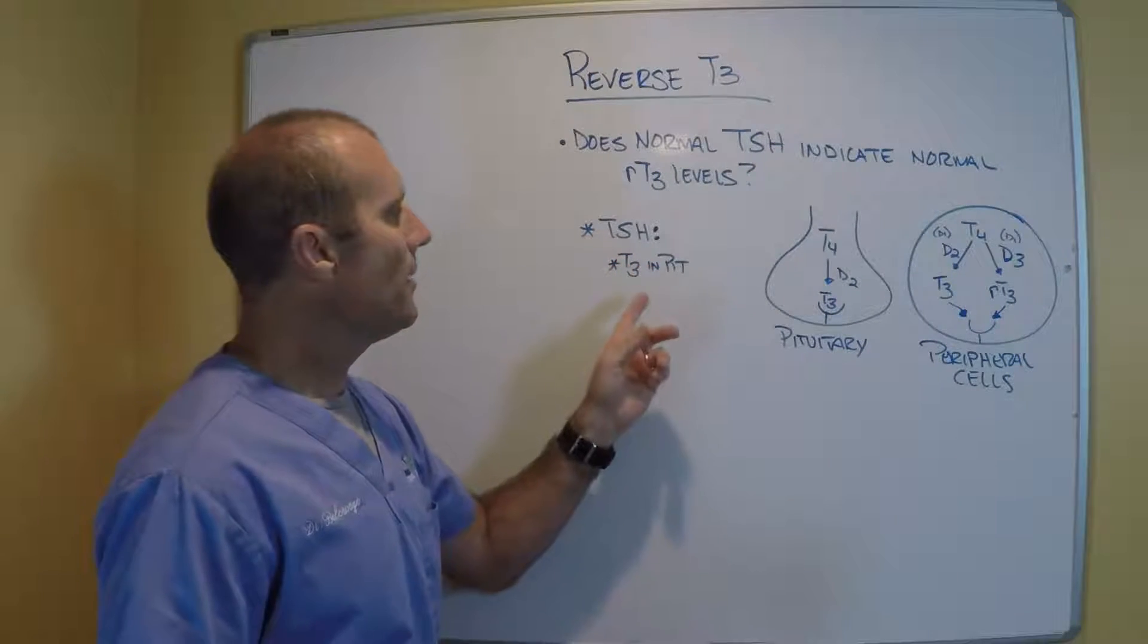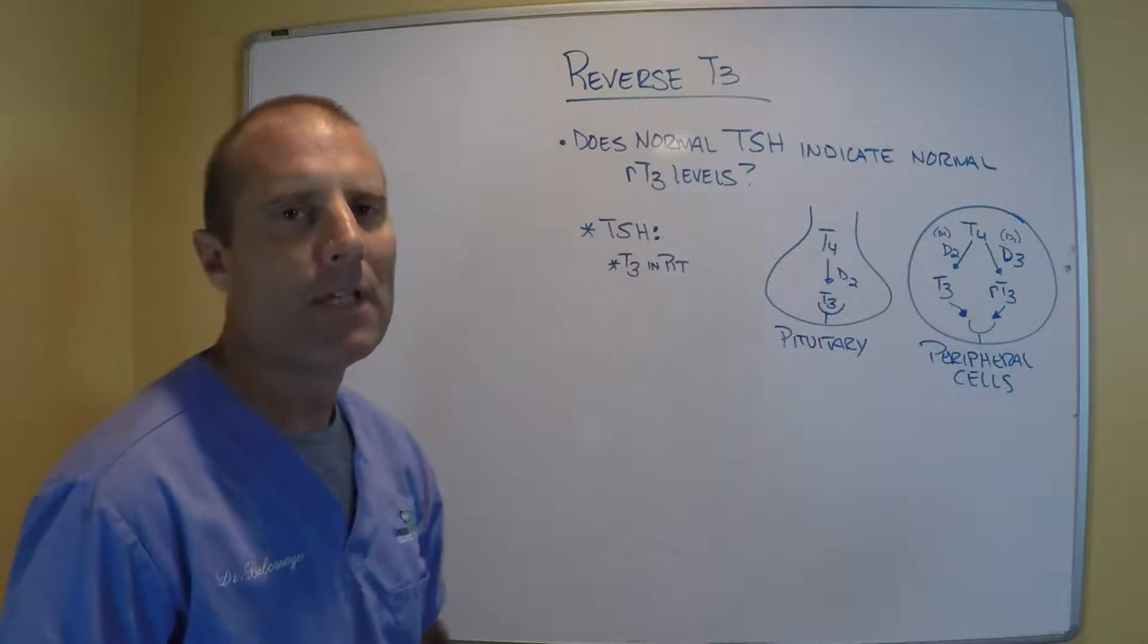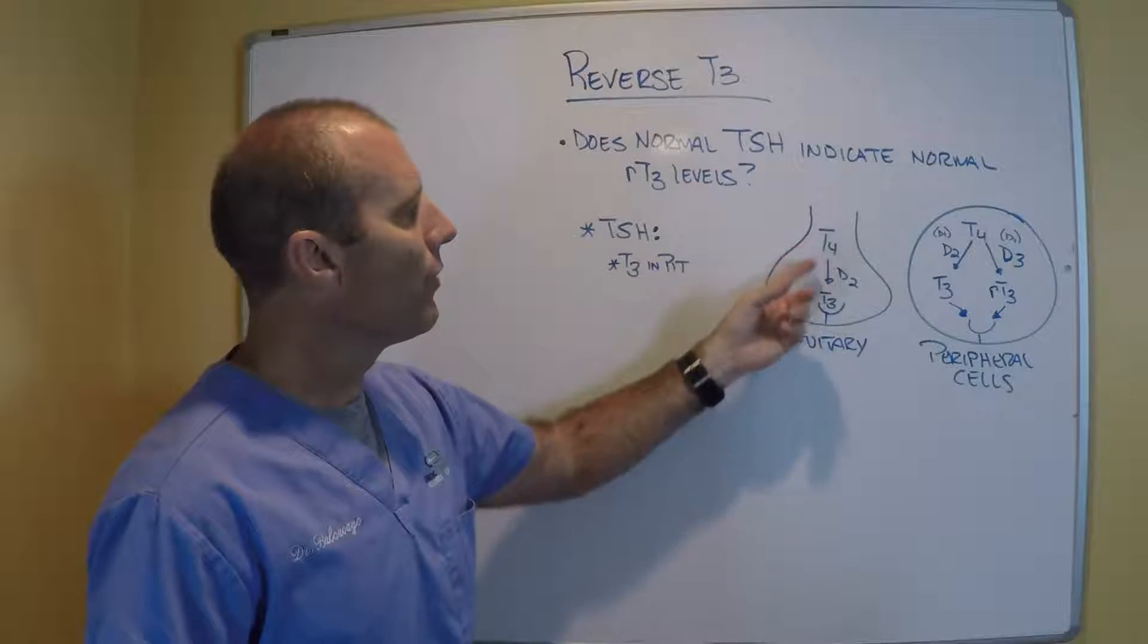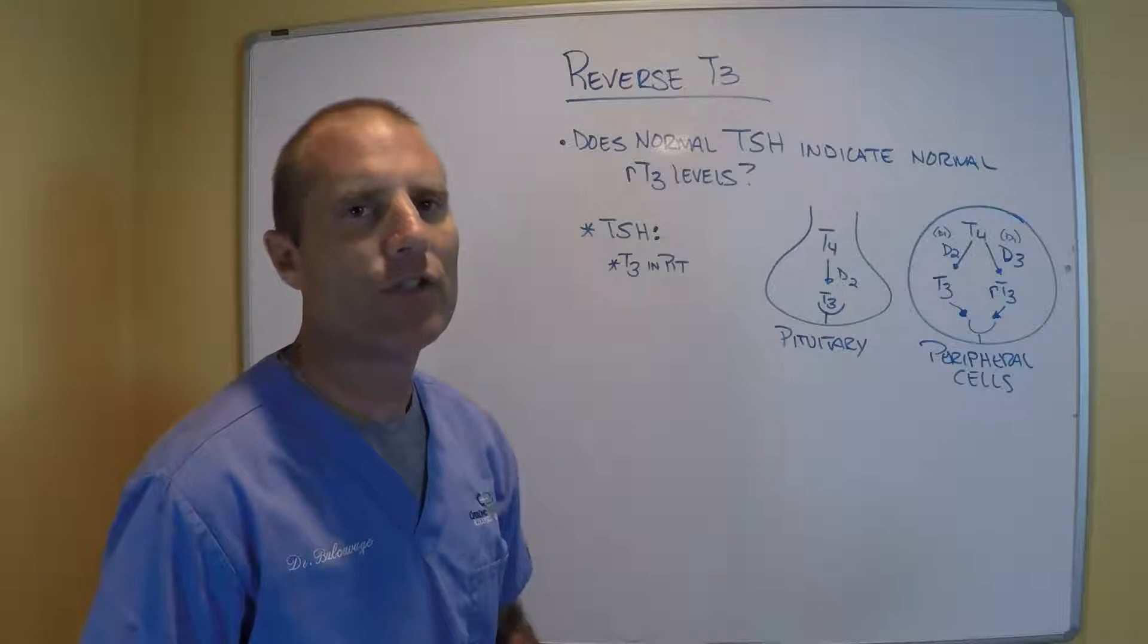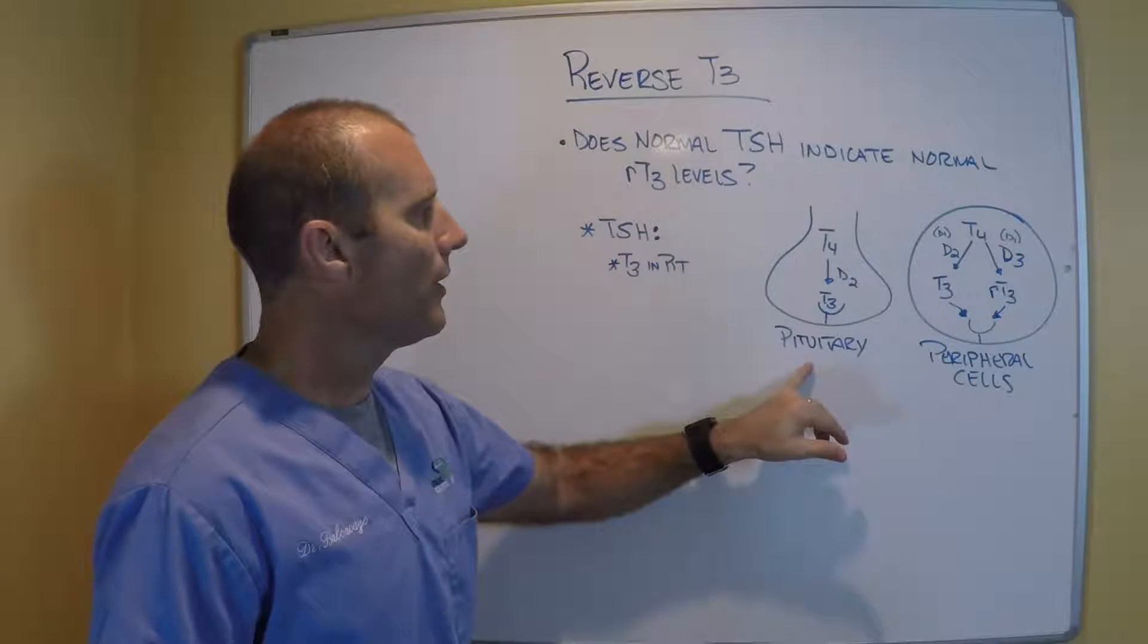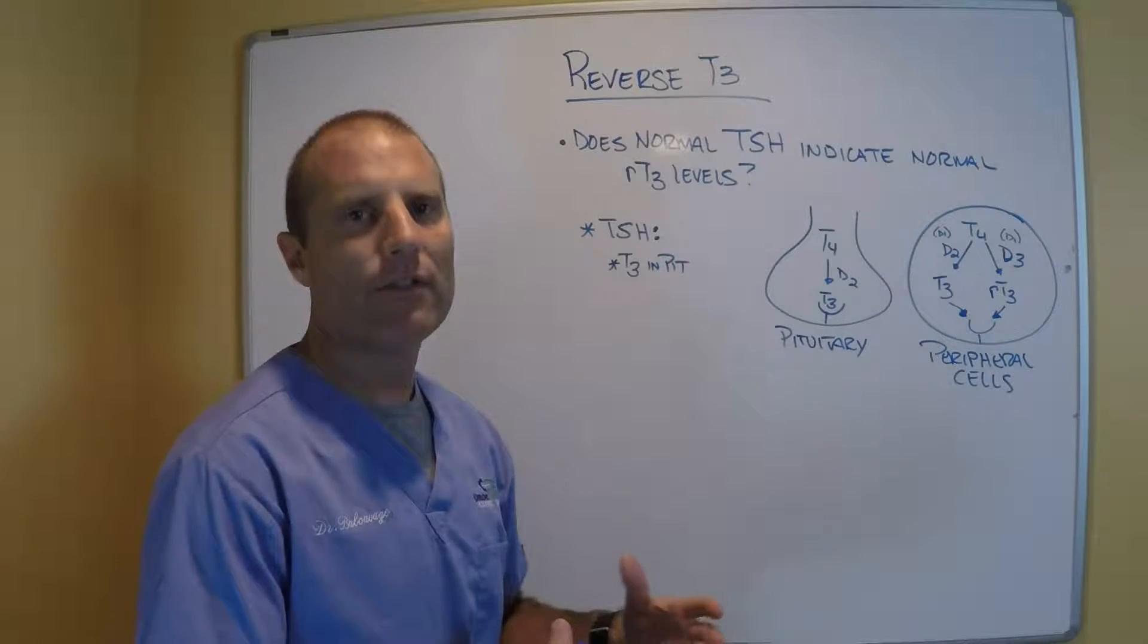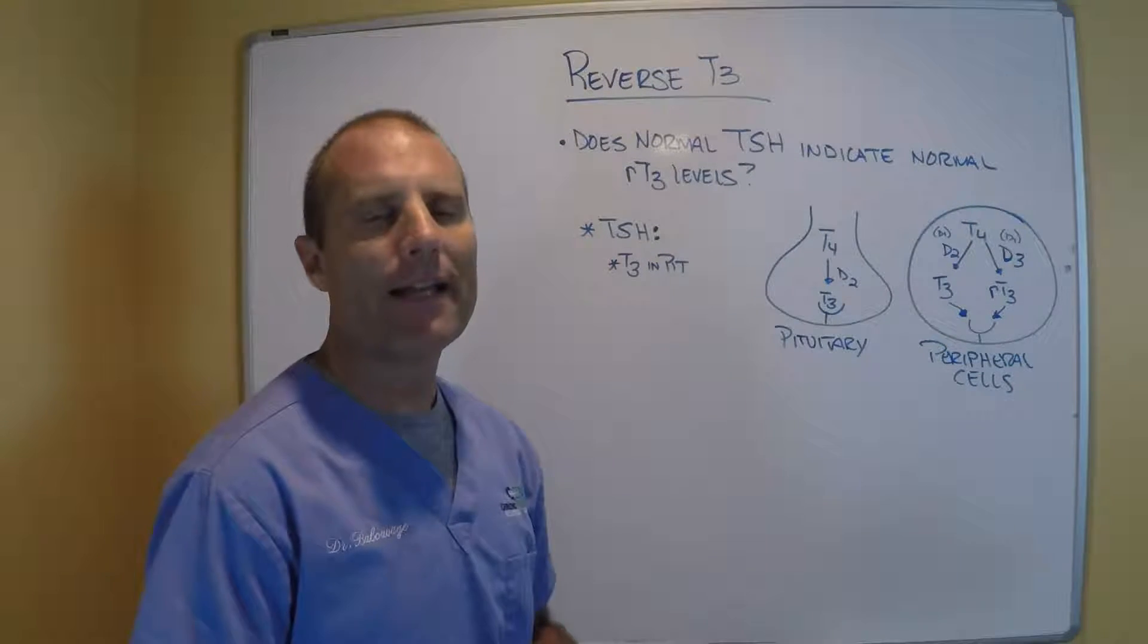So TSH represents the T3 levels in the pituitary gland. So how does this work? When there's stimulation in the body, T4 is converted to T3 by an enzyme called deiodinase 2. In the pituitary gland, the only enzyme that really is present for a conversion of T4 to T3 is the deiodinase 2.